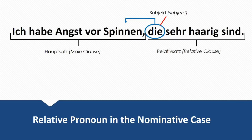Next example: Ich habe Angst vor Spinnen, die sehr haarig sind. I'm afraid of spiders that are very hairy. In this relative clause, we're using 'die', and die refers back to Spinnen. Spinnen is plural, that's why we have to use die — the plural article.